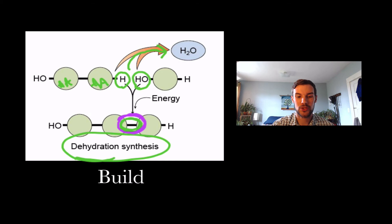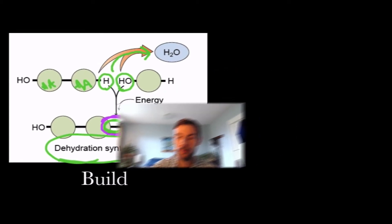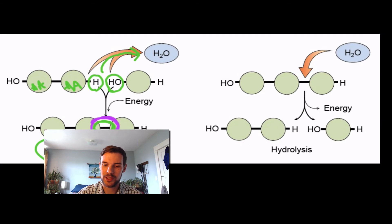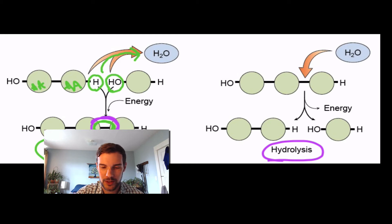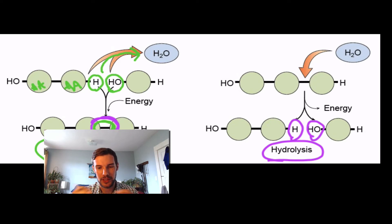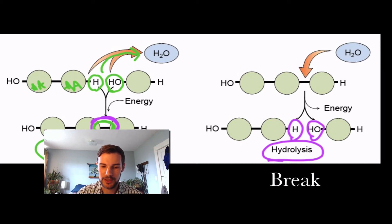If we ingest amino acids and want to build proteins, we go through dehydration synthesis. If we want to break down those macromolecules, the reverse process is hydrolysis — we add water to the molecule and break it apart. The hydrogen and hydroxyl group are added back, breaking polymers into smaller units, monomers.